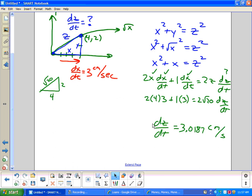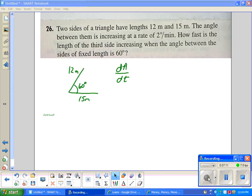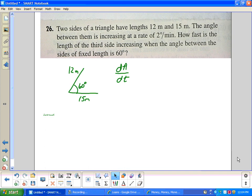We're going to move on to the next one, number 26. The final problem today is 26. Two sides of a triangle have lengths of 12 and 15 meters. The angle between them is increasing at 2 degrees per minute. How fast is the length of the third side increasing when the angle between the sides is 60 degrees?